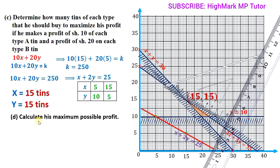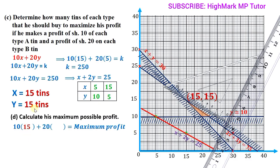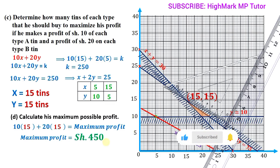For part D, we calculate the maximum possible profit. Substituting x = 15 and y = 15 into the objective function 10x + 20y: 10×15 + 20×15 = 150 + 300 = 450 shillings. The maximum possible profit is 450 shillings. Thank you for watching.